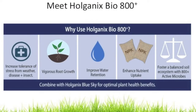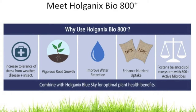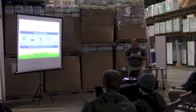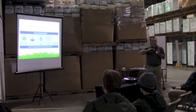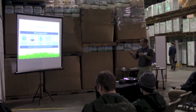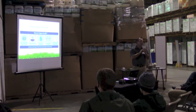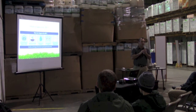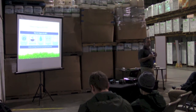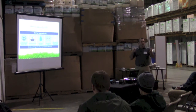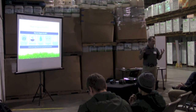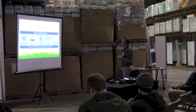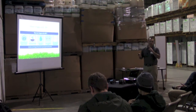Enhanced nutrient uptake — we talk about reduction of pesticides all the time, but you also get an NPK reduction. The biology within the soil is converting usable food sources at a faster rate. That overall ecosystem is like a metabolism: the faster you get it working, the more nutrients you can extract. We've dialed it in so we can use fewer nutrients and get more out of them — and foster a balanced soil ecosystem with 800-plus active microbes, hence the name Bio 800.